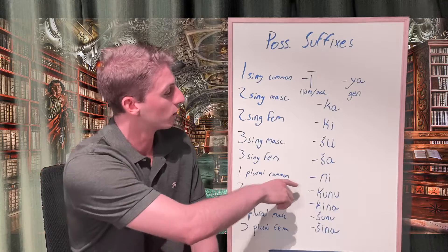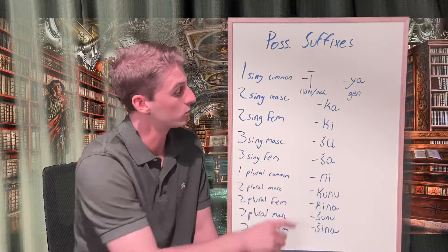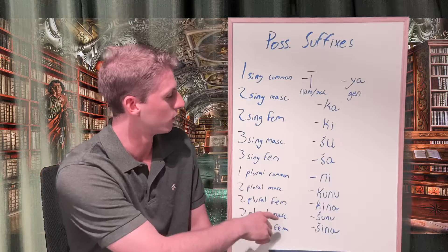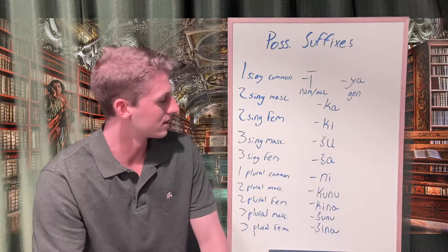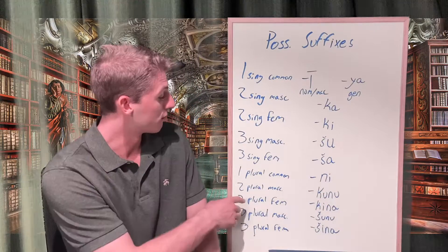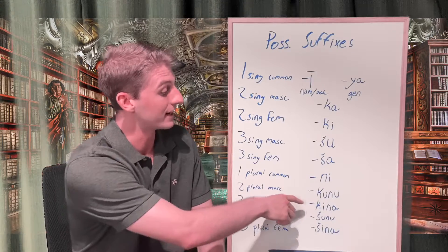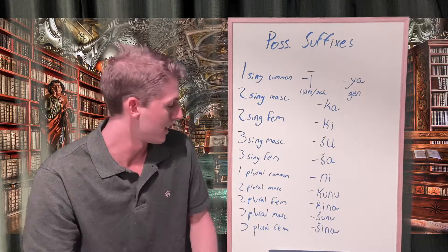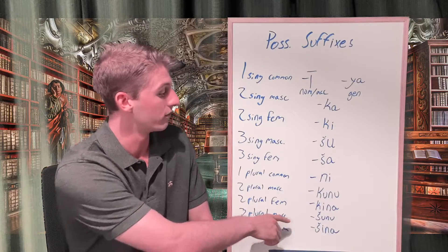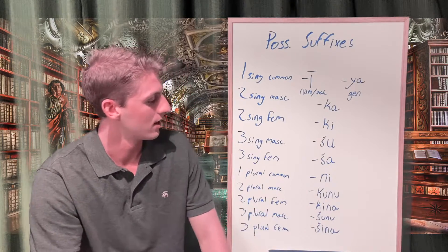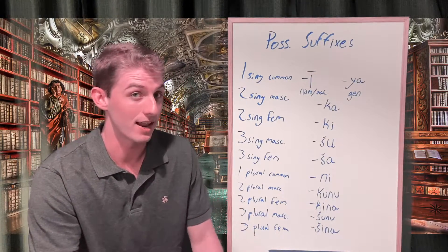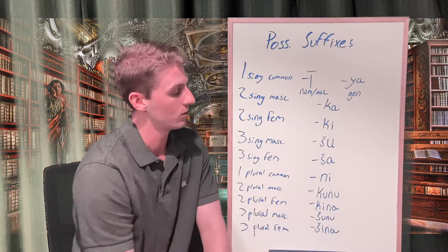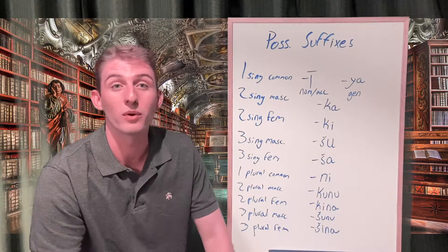For the first person plural common, we find 'ni,' translating as 'our.' For the second person plural masculine, we find 'kunu,' meaning 'y'all's' with a masculine noun. For the second person plural feminine, we find 'kina,' meaning 'y'all's' with a feminine noun. For the third person plural masculine, we find 'šunu,' meaning 'their' with a masculine noun. For the third person plural feminine, we find 'šina,' meaning 'their' with a feminine noun.